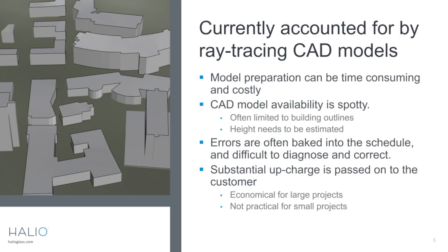Currently, most automated shading control systems can account for exterior geometry. What they do is build a CAD model of the building and the site, and then ray trace from the windows to the site. The trouble with this is that setting up the CAD model and verifying that it's accurate can cost money and add a lot of time to the project.